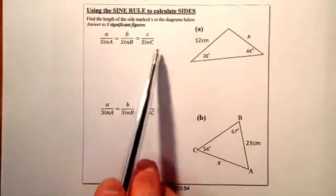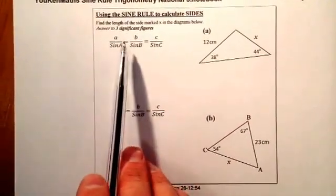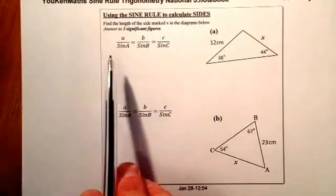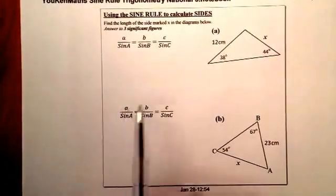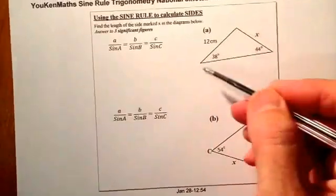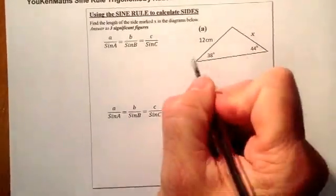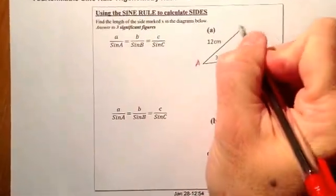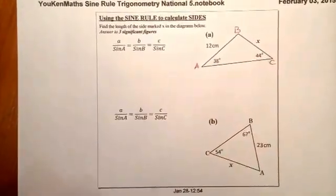Now in the formula list, you'll have a formula for the sine rule, and that's where we're going to start from. So what I'm going to do with the triangle here, I'm going to label it up. I'm going to label this A, I'll have B up at the top here, and I'll have C down here.